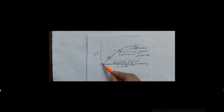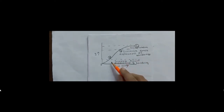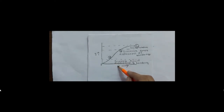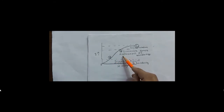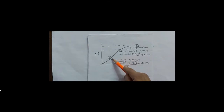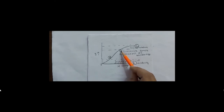As we increase the magnetic field from zero up to point A, reversible domain displacement of boundaries takes place — we can reverse it up to A. But as we further increase the magnetic field from A to B, it moves toward irreversible displacement of domain boundaries. After B, it is irreversible and we cannot reverse it.